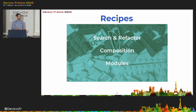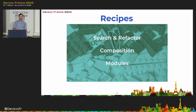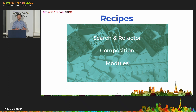There are modules, for example, for logging frameworks, testing frameworks, and application frameworks such as Spring. In my opinion, the abstract syntax tree combined with the large collection of open-source recipes is what sets Open Rewrite apart from other similar tools, such as Google error-prone's Refaster.